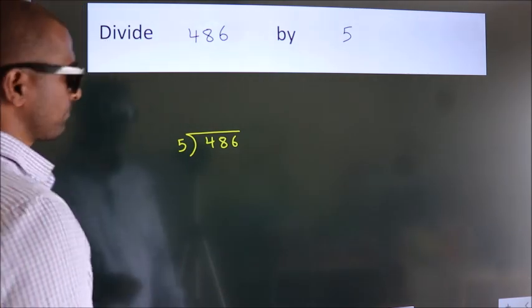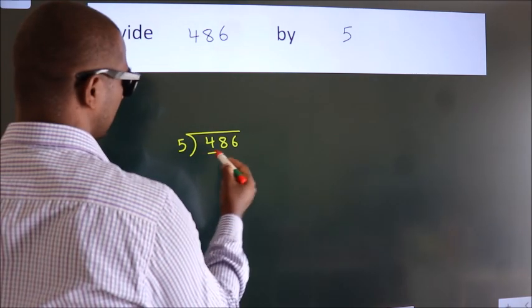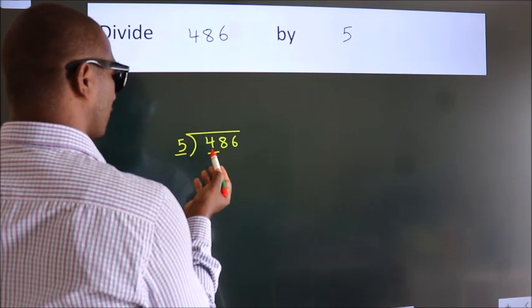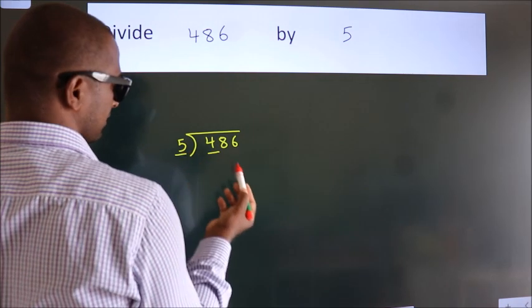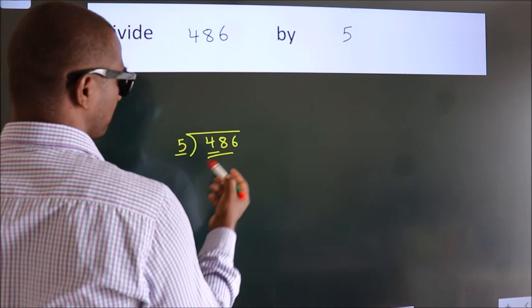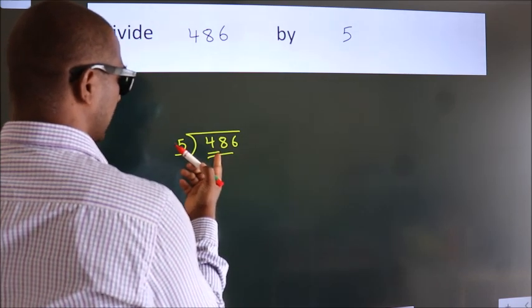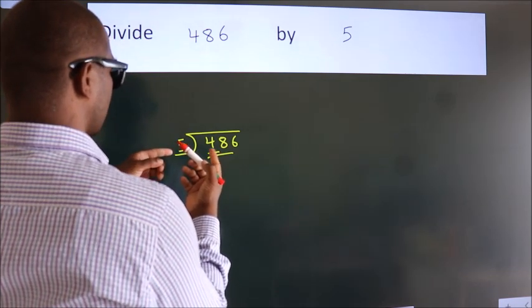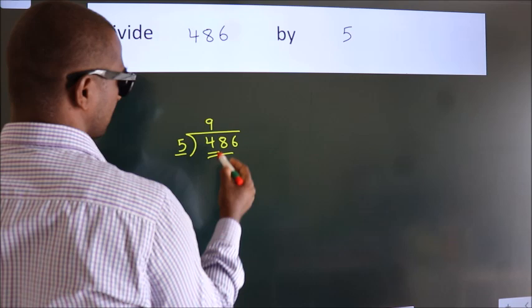Next. Here we have 4. Here 5. 4 smaller than 5. So, we should take two numbers. 48. A number close to 48 in 5 table is 5 nines 45.